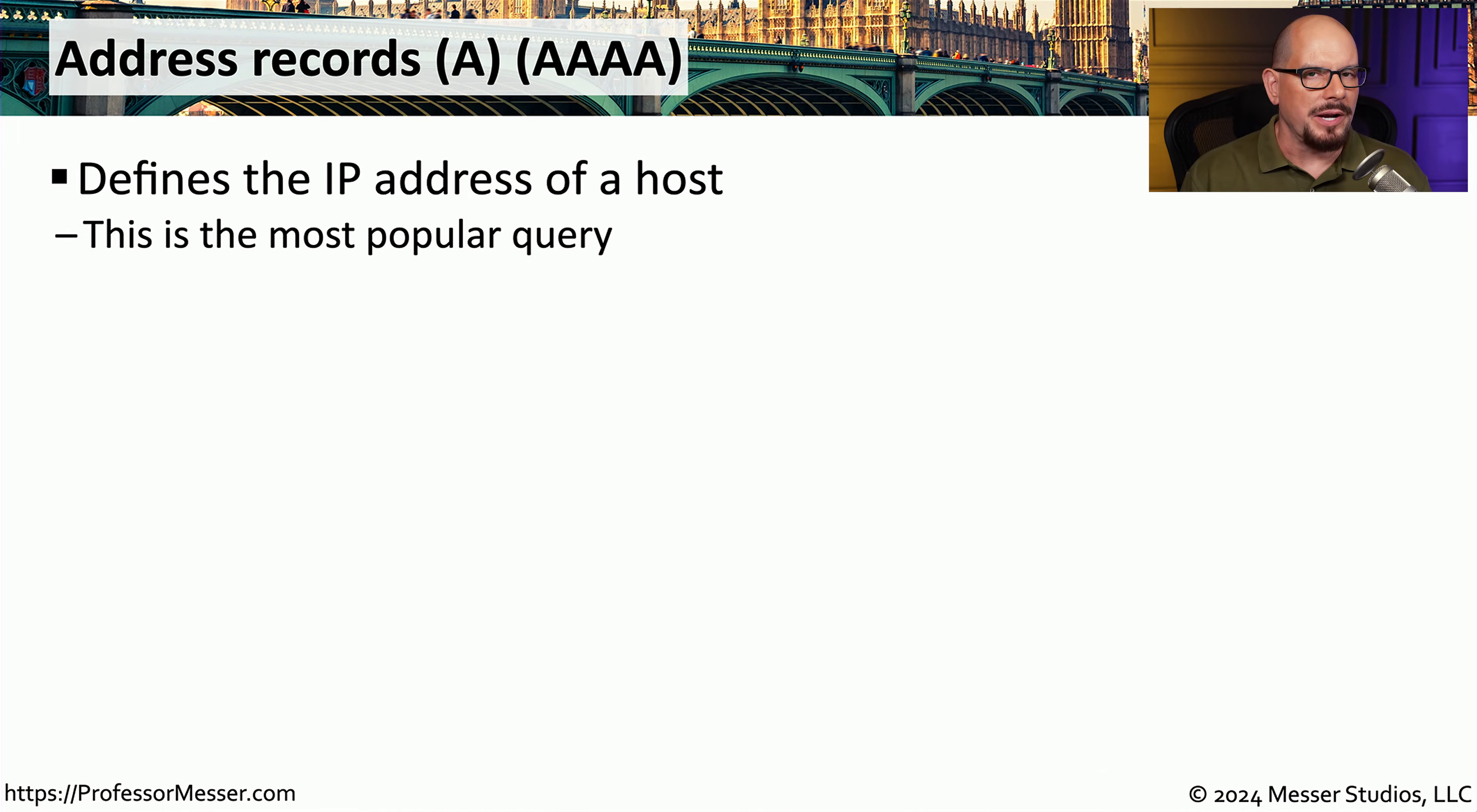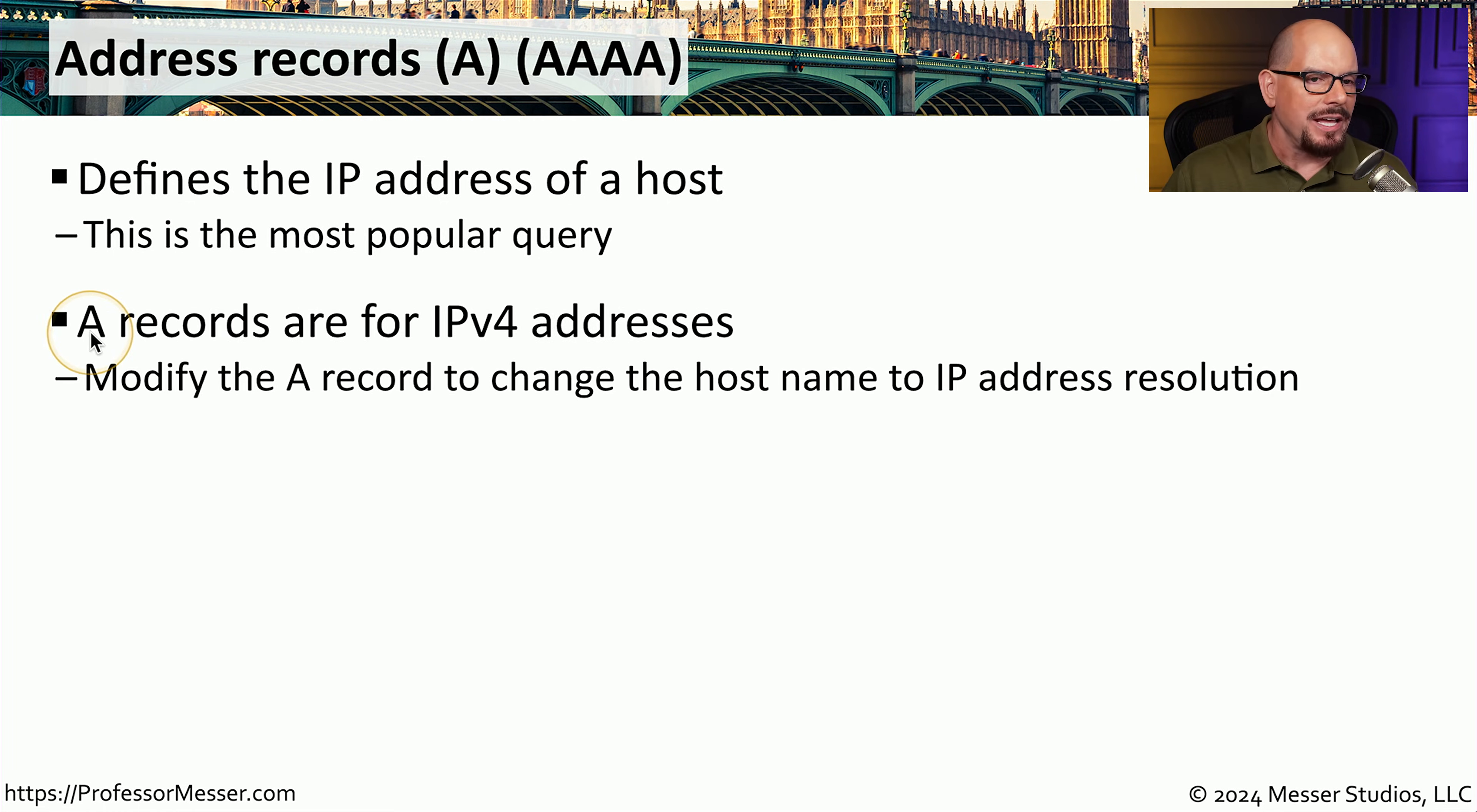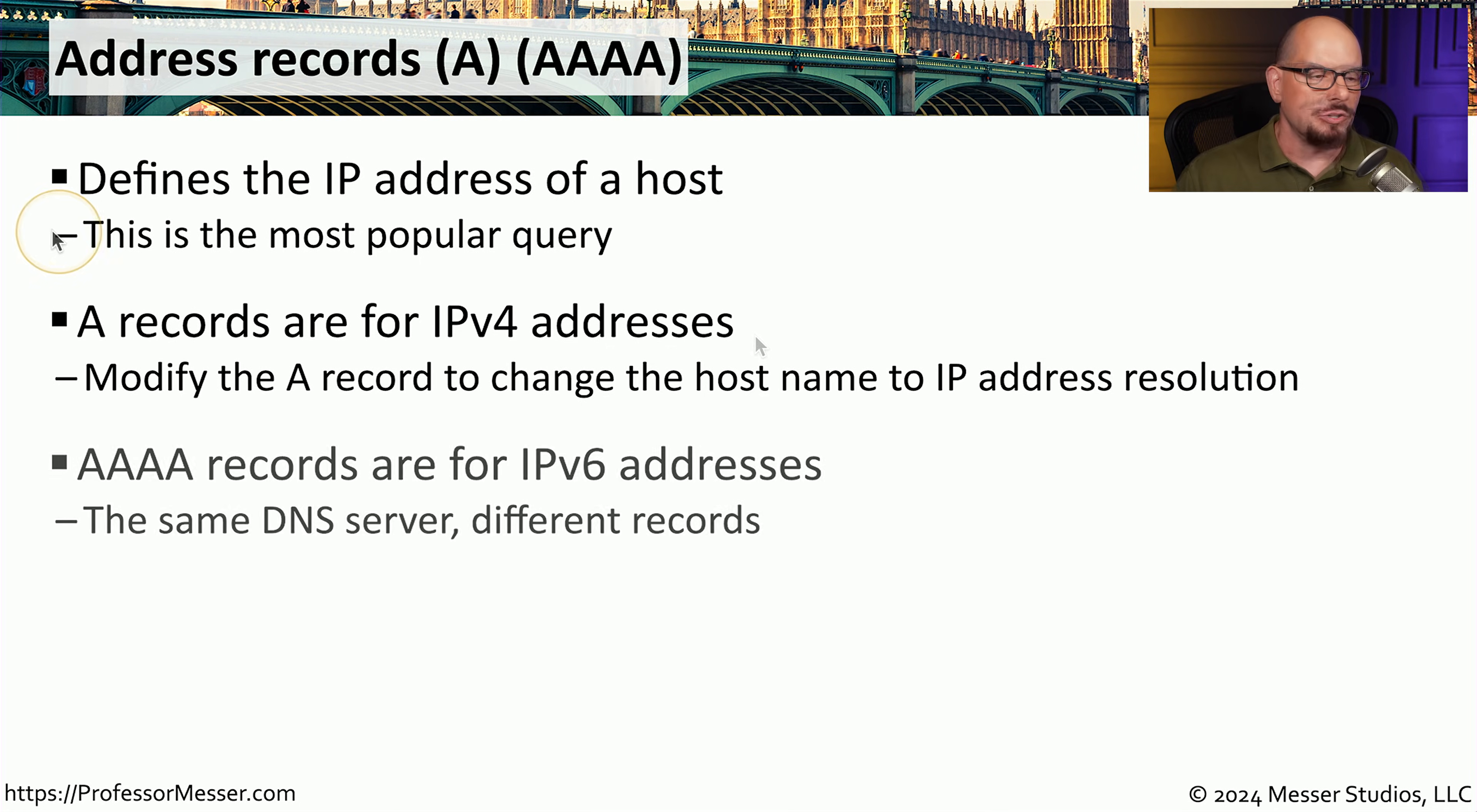One of the most common record types you will find in a DNS server is the A record, or the Quad A. This record defines the IP address of a host. This is the record containing the information we need when we send a query to a DNS server. Records marked with an A are for IP version 4 addresses, so you'll often see the IPv4 address and the name of the device associated with that IP address. Records marked with 4As, or Quad A records, are for IP version 6.